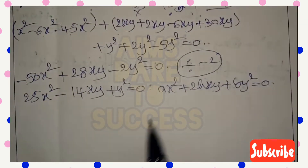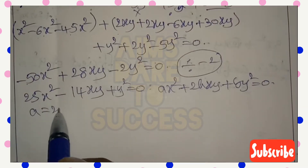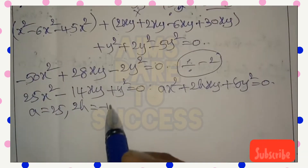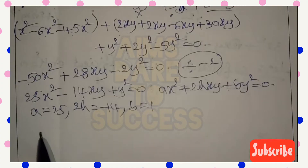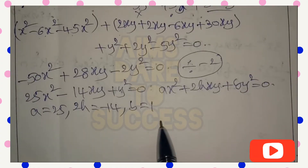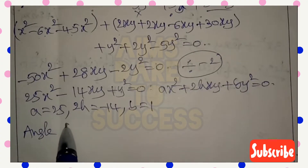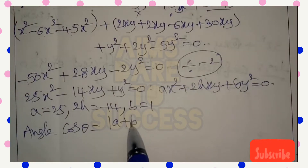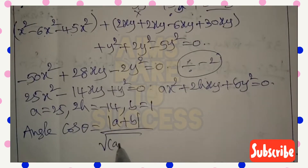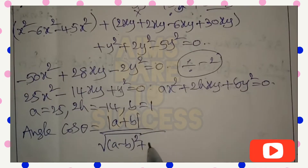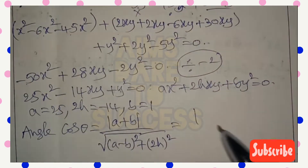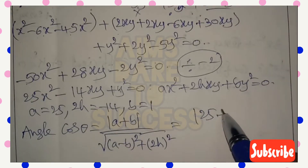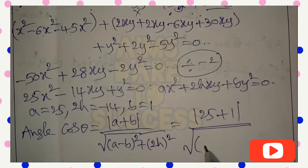Comparing with ax² + 2hxy + by² = 0: a = 25, 2h = -14, and b = 1. Now we find the angle using the formula: cos θ = |a + b| / √[(a - b)² + (2h)²]. Substituting: a + b = 25 + 1 = 26.